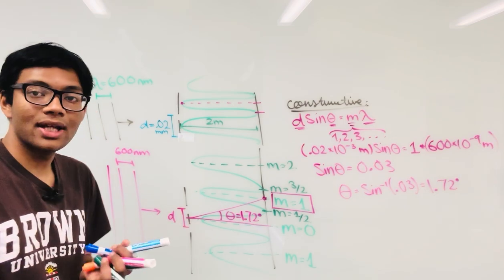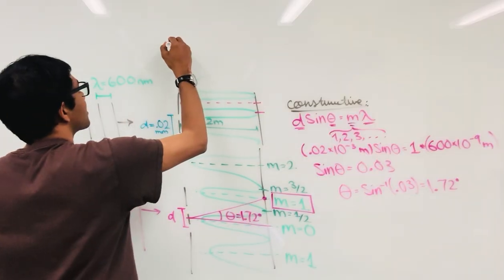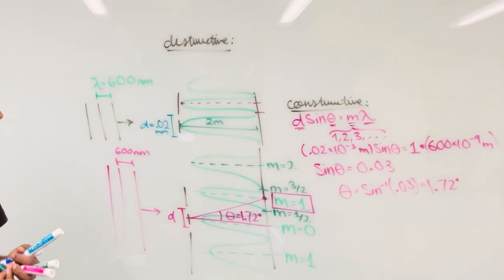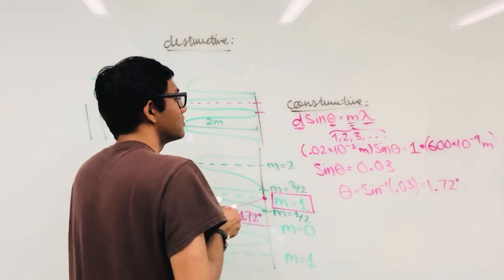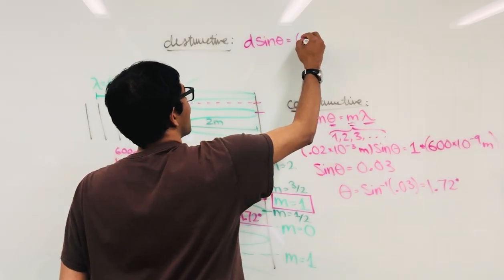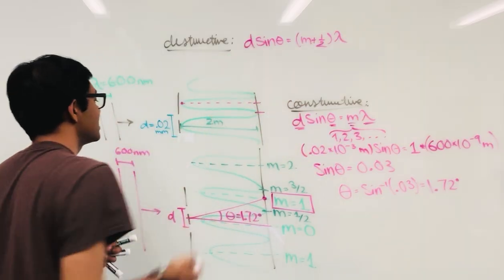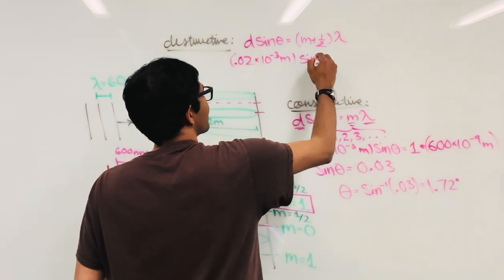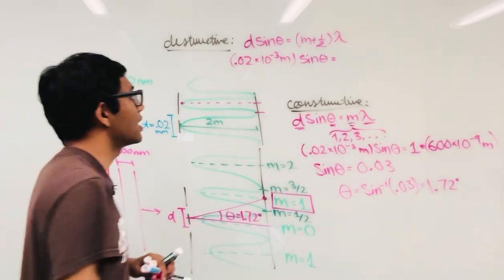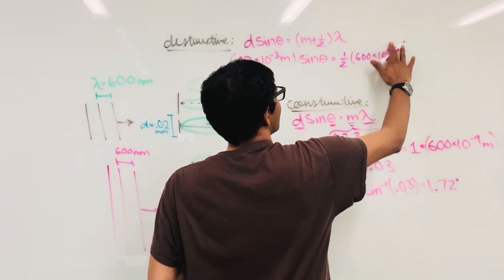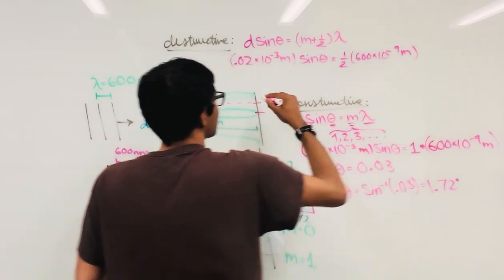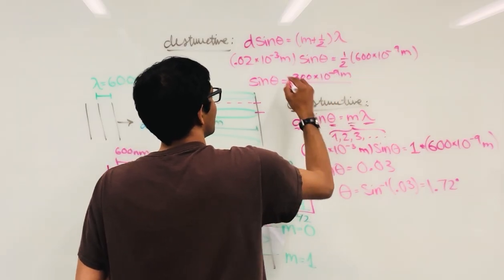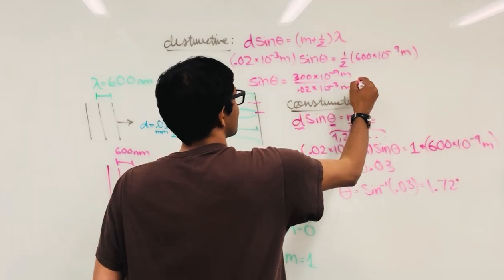Now we can play the same game for destructive interference. To calculate the location of the destructive fringes, we replace M with M plus one-half, so D sinθ = (M + ½)λ. D is again 0.02×10⁻³ meters. Setting M=0, we get one-half times 600×10⁻⁹ meters, which is 300×10⁻⁹ meters.